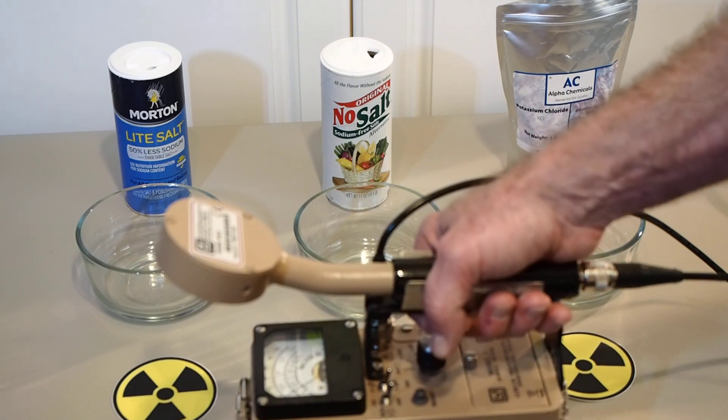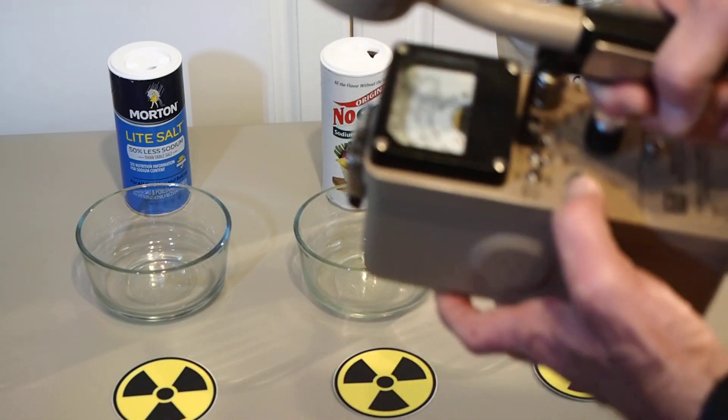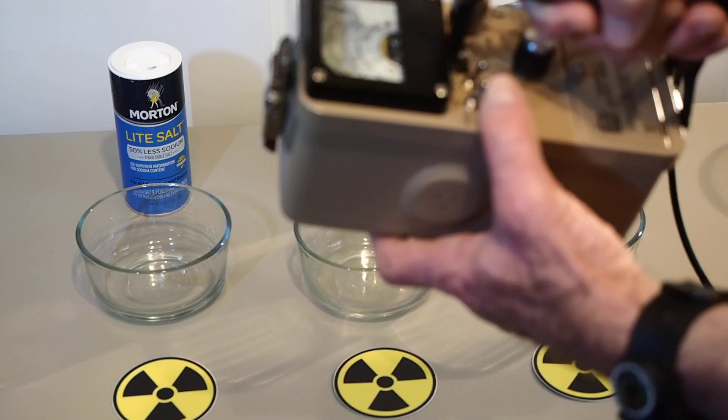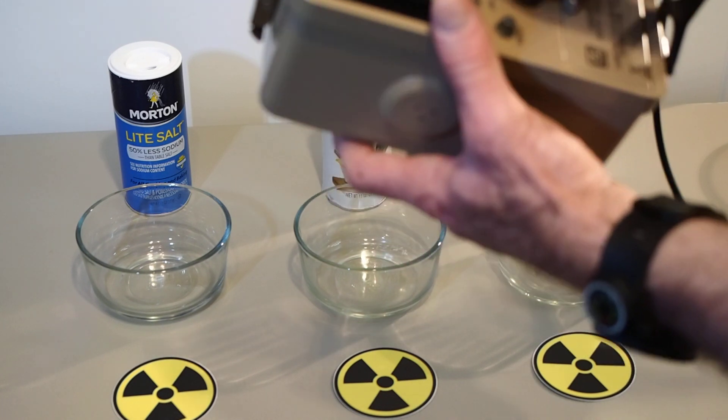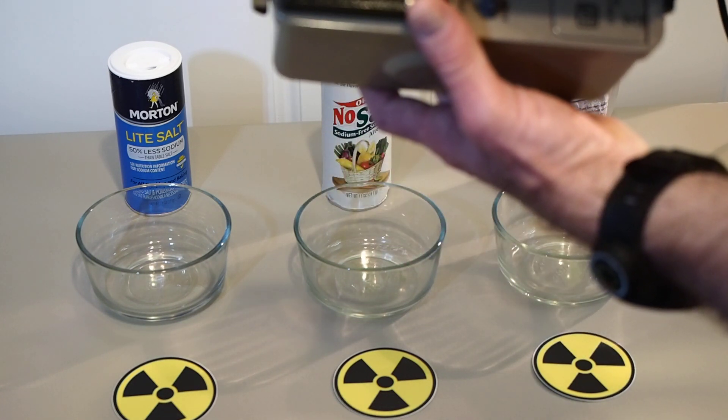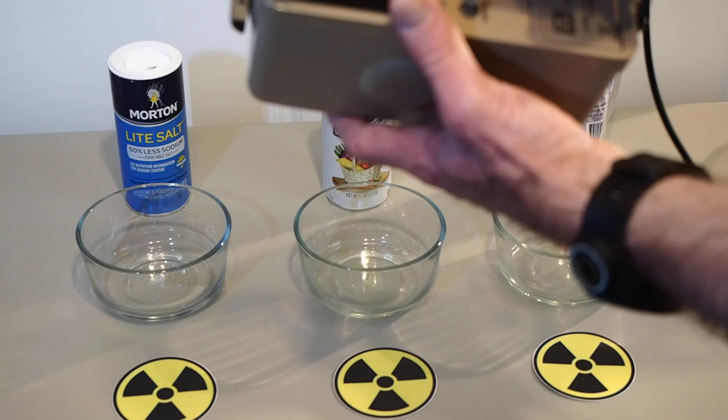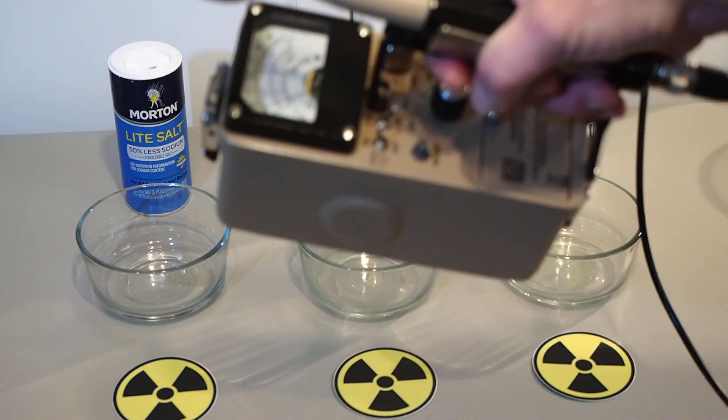First of all, we'll take a background for this particular room. So let's turn on our survey meter and I'm going to put it in the times 0.01 setting, very low setting, and we'll see what kind of background we get in this room.